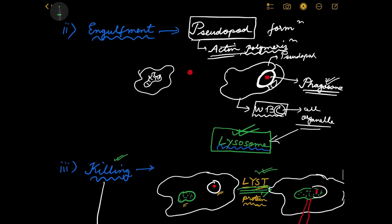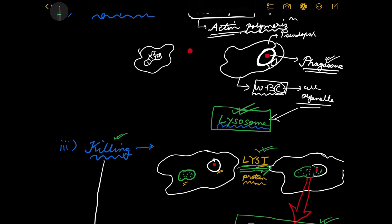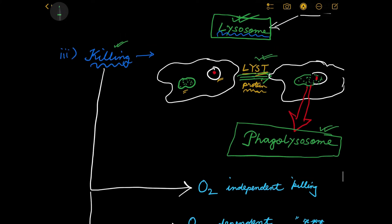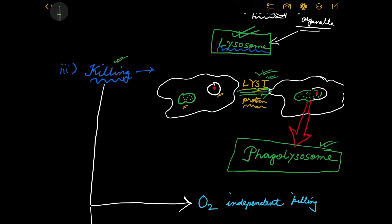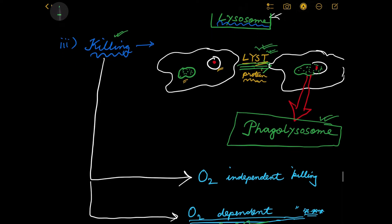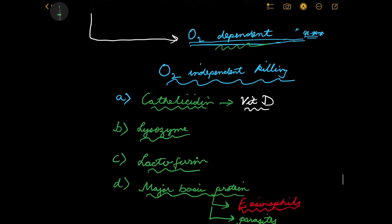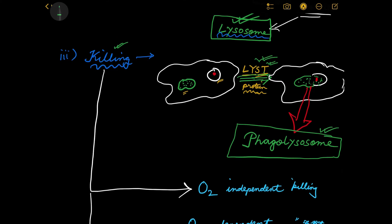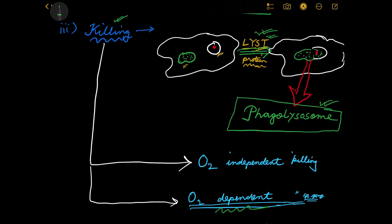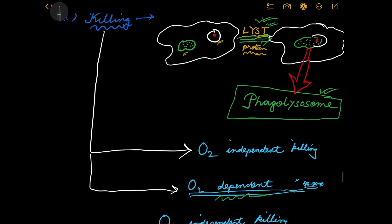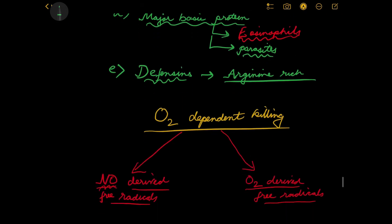After engulfment and phagosome formation, the LYST protein — lysosomal transporter protein — is required for transporting the phagosome towards the lysosome within the white blood cell. Their fusion causes phagolysosome formation, after which the array of inflammatory steps can proceed. If there is a defect in this LYST protein, however, a very characteristic syndrome results.